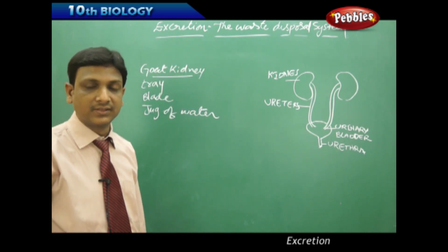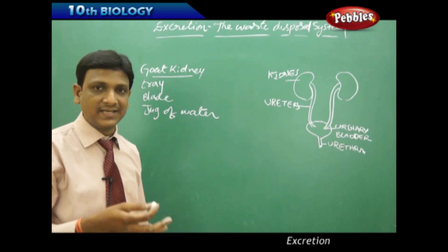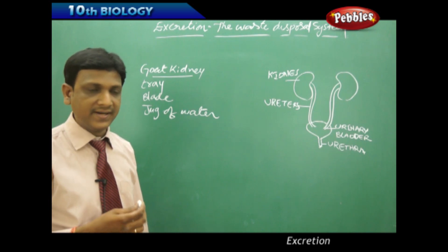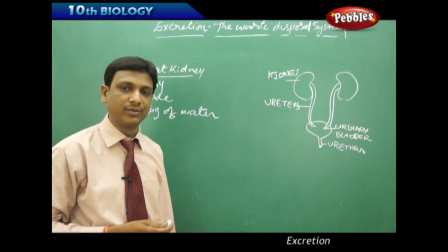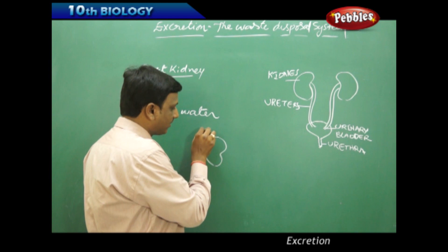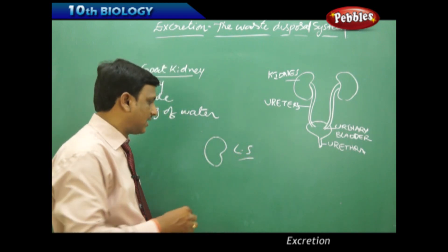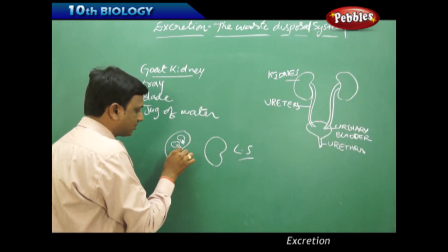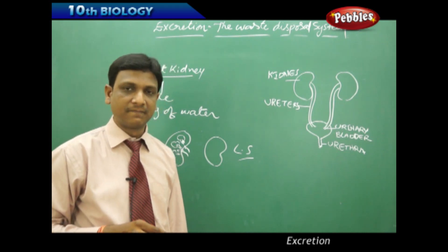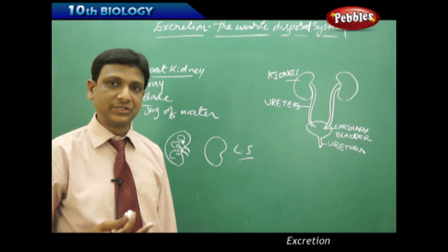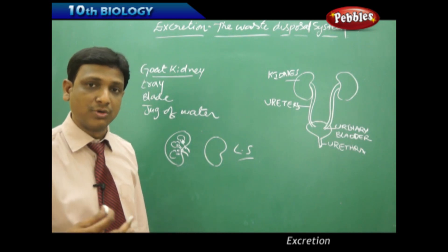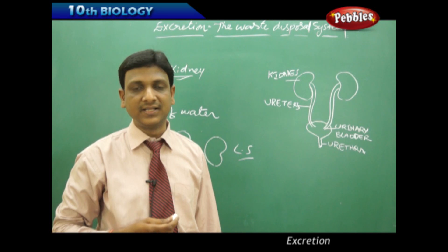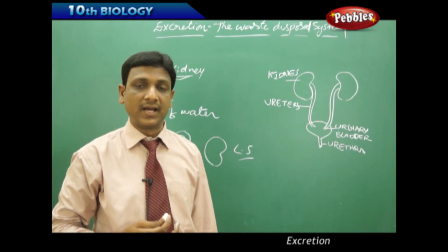Take the fresh goat kidney, place it in the tray, and wash it thoroughly. Clearly observe its shape and any connections it has. Then, carefully — only under the supervision of your teacher or elders — cut a longitudinal section of the kidney using a blade. You will then be able to see the interior structures. Make note of your observations. Since a goat is a mammal, its kidney is somewhat similar to the human kidney, giving you a chance to observe it practically.